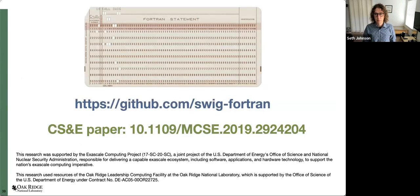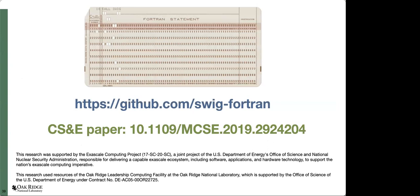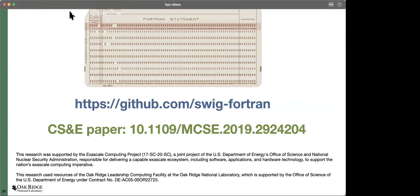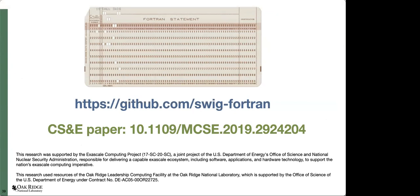I'd be happy to entertain any more questions. On GitHub, SWIG Fortran is a fork of SWIG — any plans to upstream the developments? There's been an open pull request for about three years. The maintainer has kind of gone quiet on me. I ping him every year or so and hope it will be integrated, but I don't know what it would take to actually get that to happen.